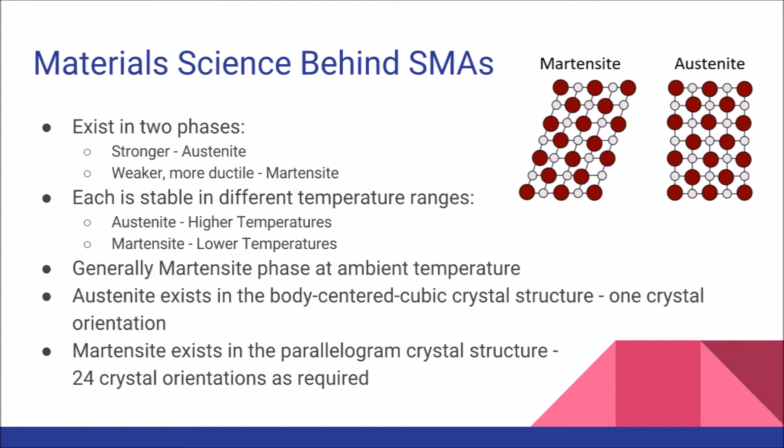In order to better understand shape memory alloys, we need to look into the material science behind them. There are two phases that the alloys exist in: the stronger austenite, and the weaker, more ductile martensite. Each phase is stable at different temperature ranges — austenite is stable at higher temperatures, while martensite is stable at lower temperatures. The exact temperatures vary between alloys, which include copper-zinc-aluminum, copper-aluminum-nickel, and nickel-titanium.